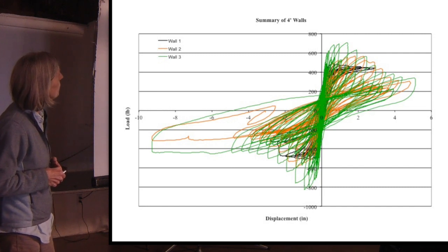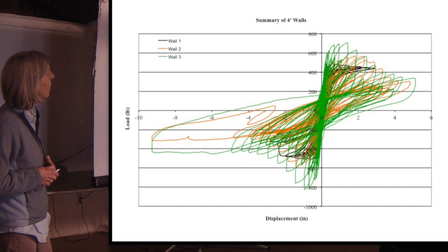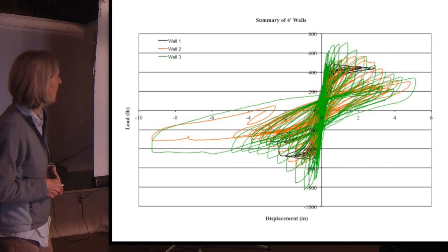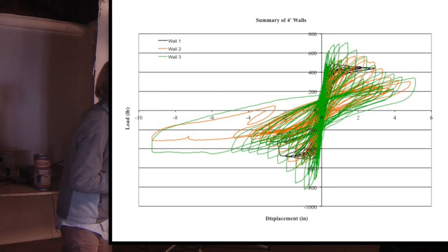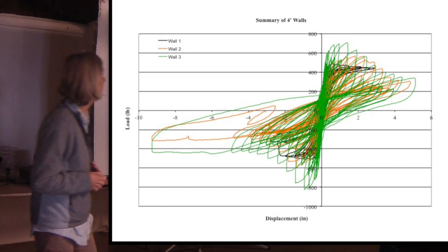The very first wall we tested was about 500 pounds. The second wall was about 600. And the third wall, if you look down here, it was a little unsymmetric in how it tested. It was about 800.